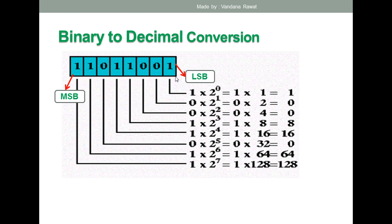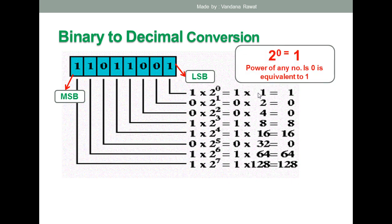So it will be 1 × 2⁰, which equals 1. Note that any number raised to the power 0 is equivalent to 1 — for example, 8⁰ = 1 and 24⁰ = 1. So 1 × 2⁰ = 1.